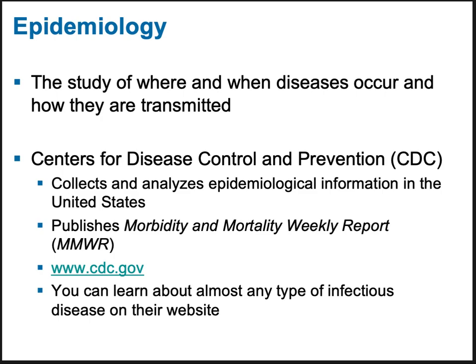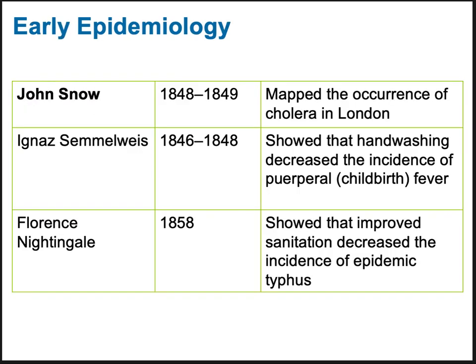The CDC publishes a weekly report called Morbidity and Mortality with statistics of what they've been tracking that week. You can access it at their website and learn about any infectious disease you want. It's a great resource and a lot of the information for our survey of infections will come from there.